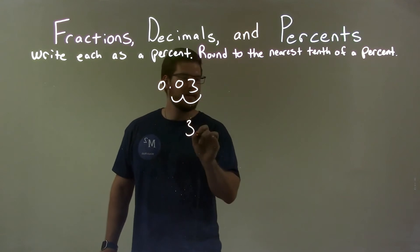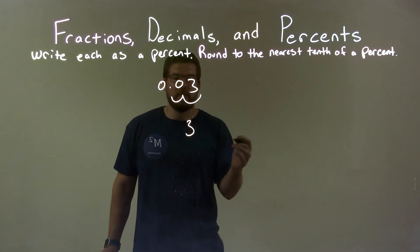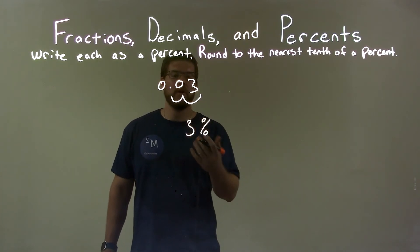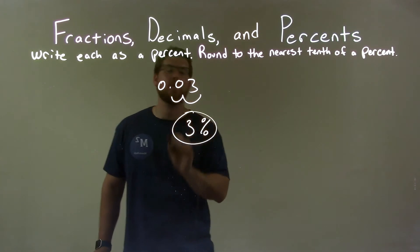That decimal place, I don't need it because I'm basically done. There's nothing else after it. So 0.03 becomes 3, put on the percent sign because we're converting it, and then we have our final answer of 3%.